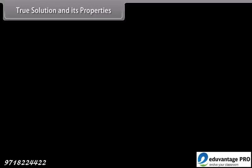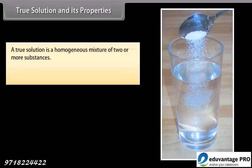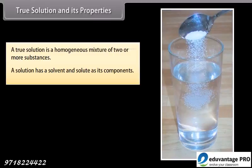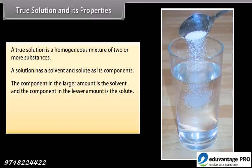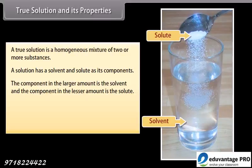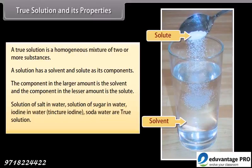True solution and its properties: A true solution is a homogeneous mixture of two or more substances. A solution has a solvent and solute as its components. The component in the larger amount is the solvent, and the component in the lesser amount is the solute. Examples of true solutions include salt in water, sugar in water, iodine in water (tincture iodine), and soda water.